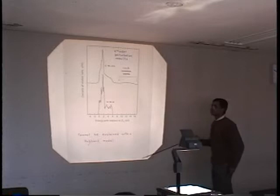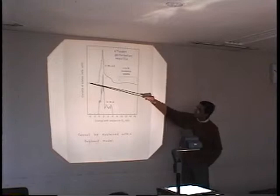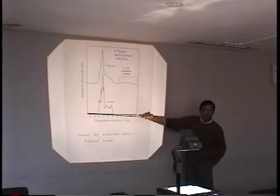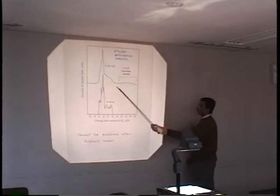Remember, this part is the occupied spectroscopy, probed by occupied spectroscopy. There is absolutely no satellite, but in the unoccupied part, which is this part, you start to see a correlation satellite.